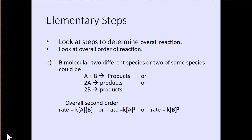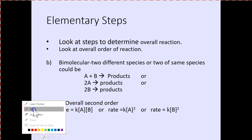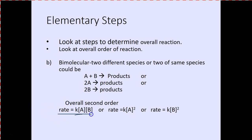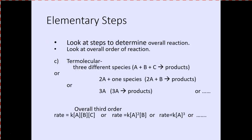Bimolecular means two different species or two of the same species — basically an overall second order rate. You can see at the bottom that a second order rate is determined here. Termolecular means three different species contributing to the order, giving an overall third order rate.